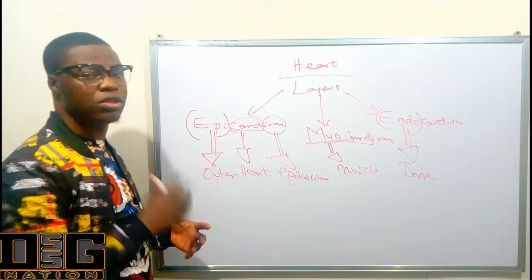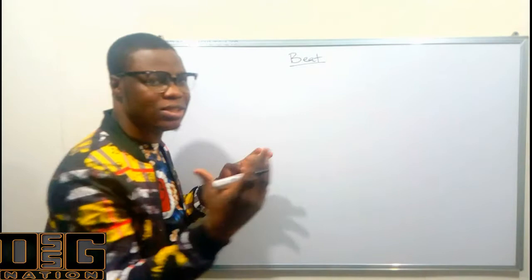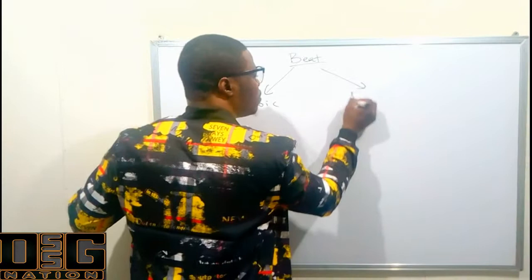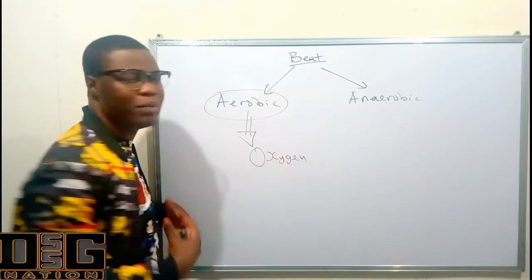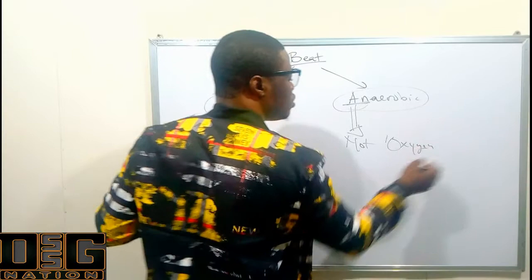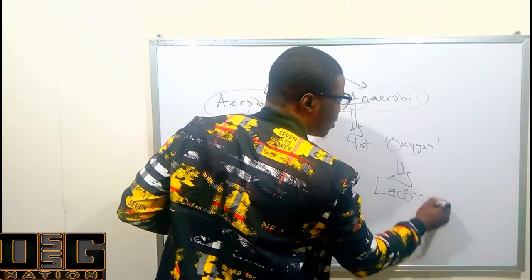Now let's talk about the beating of the heart. Based on oxygen, we have two types of beating activity. The first is aerobic beating, which makes use of oxygen to perform the beating. The second is anaerobic beating — 'an' means no, so it does not use oxygen. Since it's not using oxygen, it produces something toxic: lactic acid.